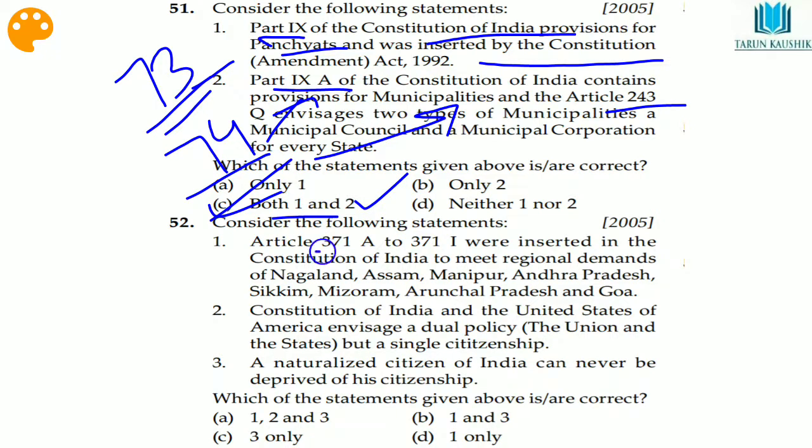Question 52: Articles 371A to 371I were inserted in the Constitution of India to meet the special demands of Nagaland, Assam, Manipur, Andhra Pradesh, Sikkim, Mizoram, Arunachal Pradesh, and Goa.